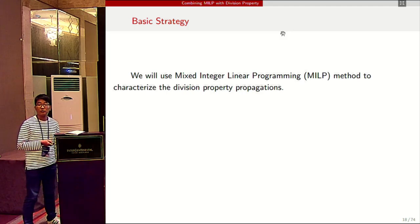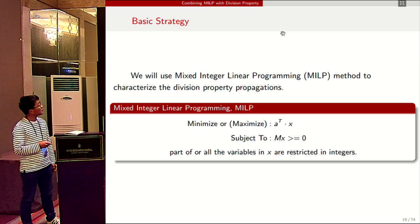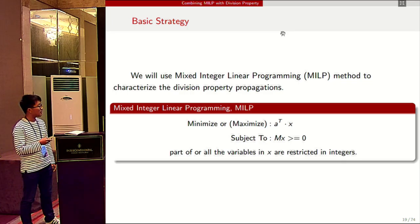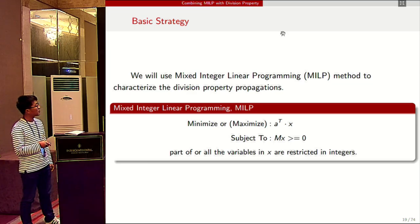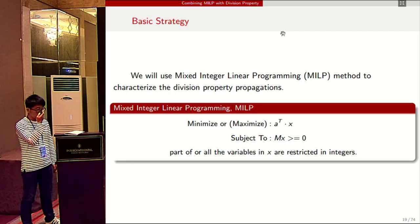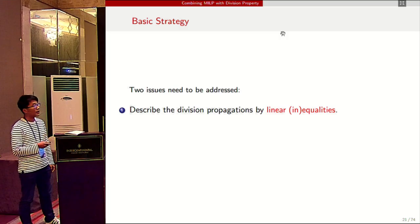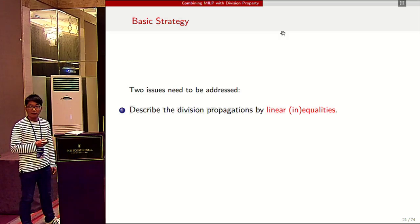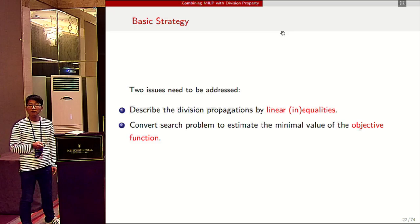The overall strategy is to use the mixed integer linear programming (MILP) method to characterize the division property propagations. The MILP program tries to find the minimal or maximum value of an objective function subject to linear constraints. In this model, M is a constant matrix and A is a constant vector, and part of the variables in X are restricted to integers. In order to complete this conversion, we need to address two issues: first, to describe division property propagations by linear inequalities; and second, to convert the search program to estimate the minimum value of the objective function.